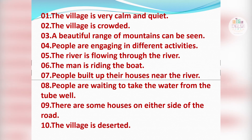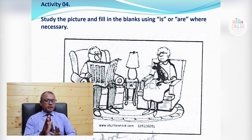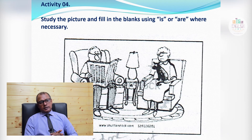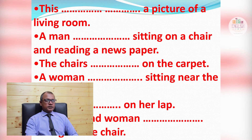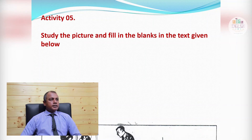Activity Four: Study the picture and fill in the blanks using 'is' or 'are' where necessary. The picture shows a living room. 'This is a picture of a living room. A man is sitting on a chair and reading a newspaper. The chairs are on the carpet. A woman is sitting near the table lamp. A cat is on her lap.' When two subjects are joined — 'the man and woman' — we use 'are.' Complete the exercise carefully.